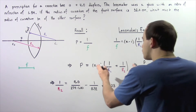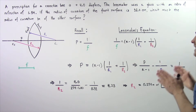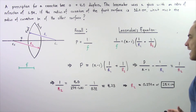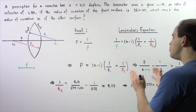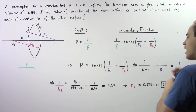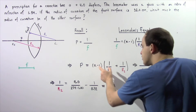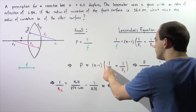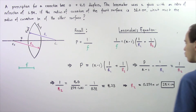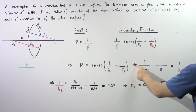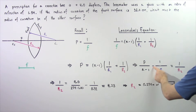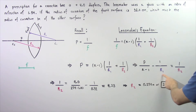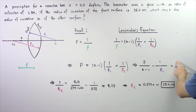Let's rearrange our equation and bring all the known values to the left side, leaving the unknown on the right side. Bringing over the N minus 1 term as well as 1 divided by R1, we get: power divided by (N minus 1) minus 1 divided by R1 equals 1 divided by R2.